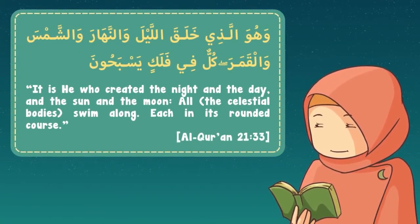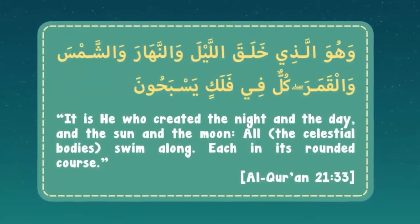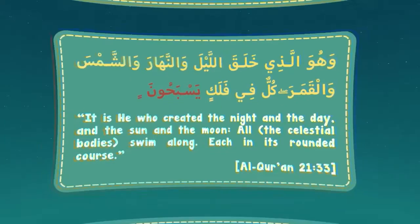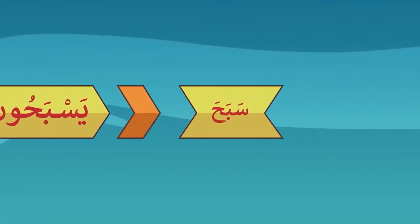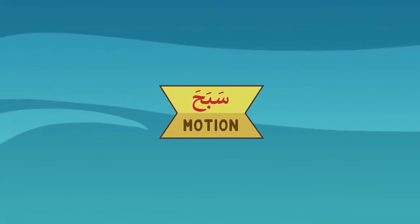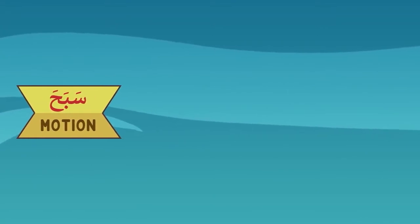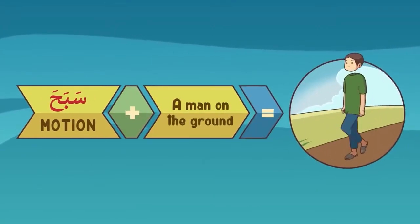The Arabic word used in the above verse is yasbahun. The word yasbahun is derived from the word sabaha. It carries with it the idea of motion that comes from any moving body. If you use the word for a man on the ground, it would not mean that he is rolling, but would mean he is walking or running.